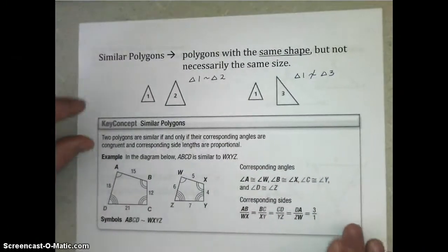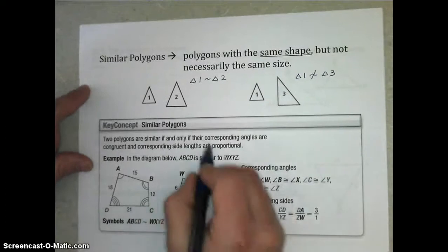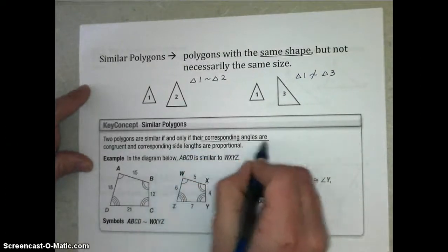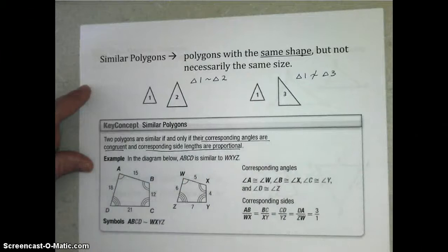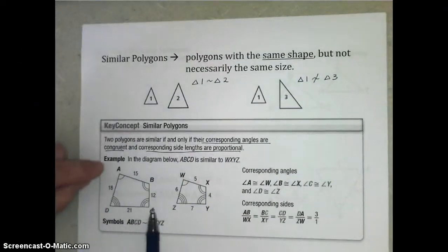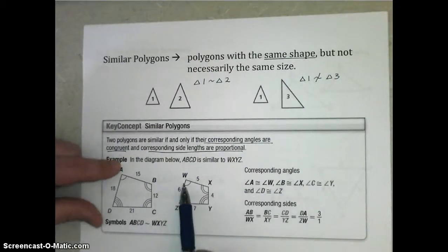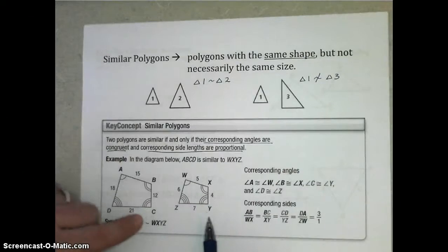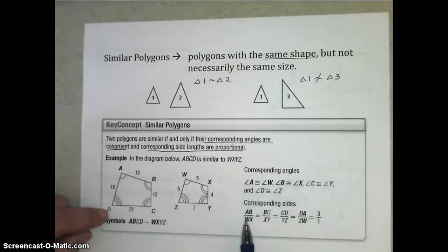Here's our similar polygons key concept. Two polygons are similar if and only if their corresponding angles are congruent, and corresponding side lengths are proportional. And so we have these two quadrilaterals: quadrilaterals ABCD and WXYZ. Notice that angle A and angle W are congruent, B and X are congruent, C and Y are congruent, and D and Z are congruent. So corresponding angles are congruent.